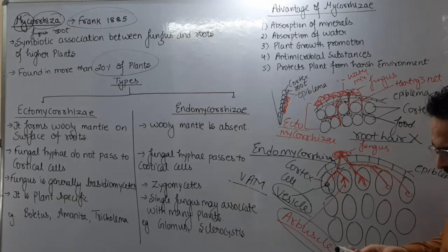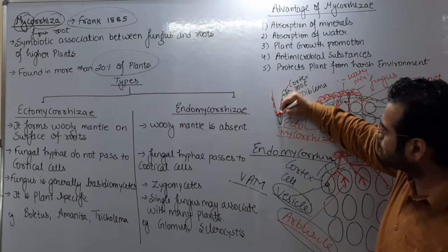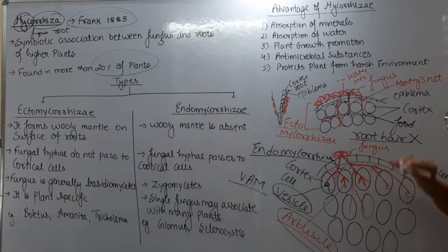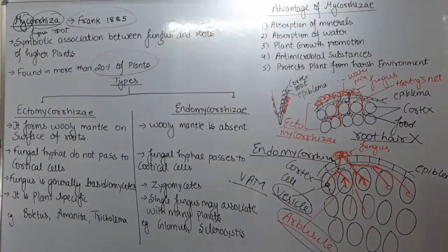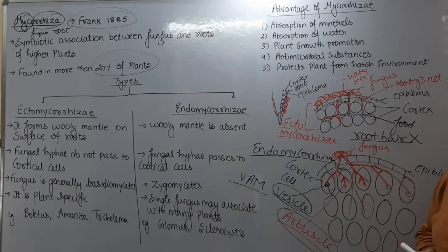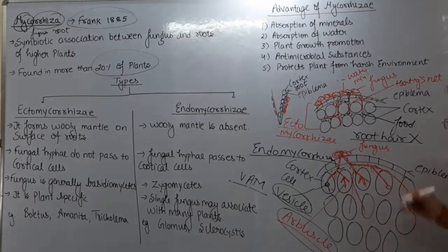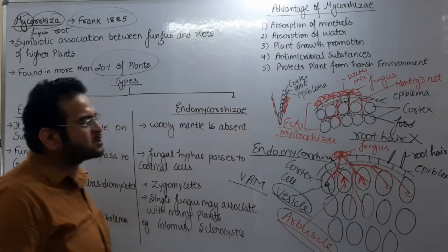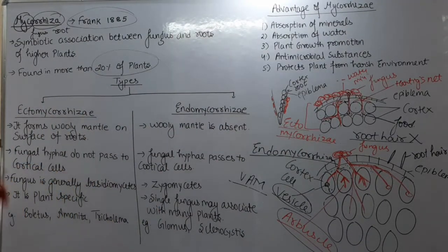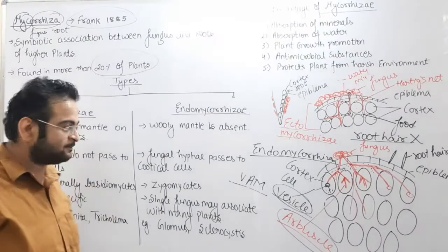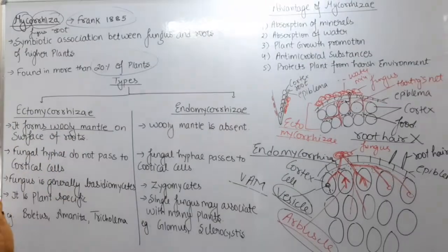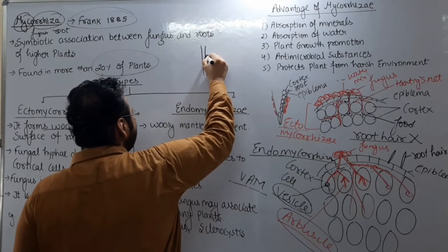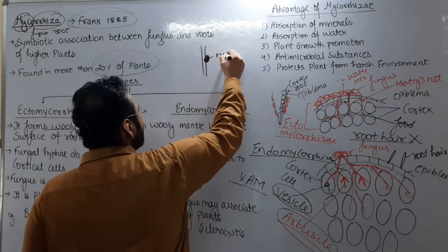Summary mein: agar fungus zyada root ke bahar hai aur kam root ke andar hai to ectomycorrhiza, aur agar fungus root ke andar zyada aur bahar kam hai to endomycorrhiza ya VAM. Ectomycorrhiza ke case mein root hair banane ki zaroorat nahi parti, aur endomycorrhiza ke case mein kuch root hair banane padte hain. So these are two important types of mycorrhiza — ecto and endo. Ectomycorrhiza ke case mein fungus woolly appearance bana deti hai on surface of root.